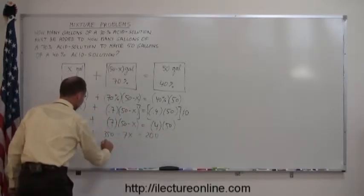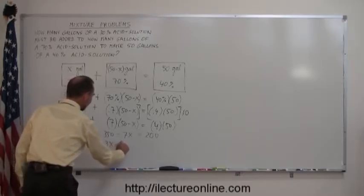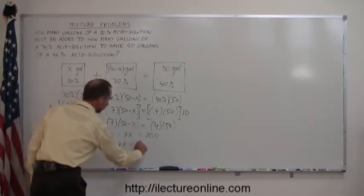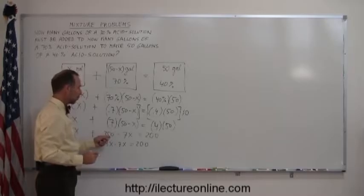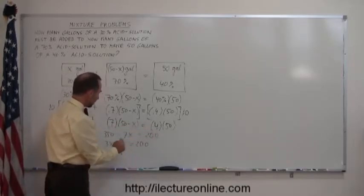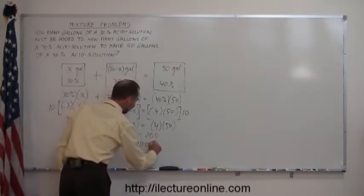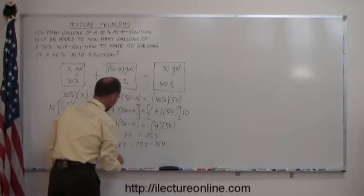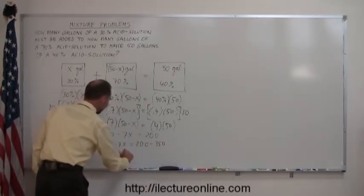So, I have these already in the right location. 3x minus 7x equals 200. And when we move the 350 over the other side, remember, we change the sign. This becomes minus 350. 3 minus 7x is minus 4x.